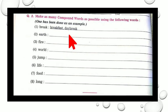So first one is done. Break. So breakfast, daybreak. Then earth. Then fire. Fireball. World. World Cup. So like this, you can form various compound words by writing as many examples as possible. So you are supposed to make compound words as much as you can make. And then you are supposed to write it here.